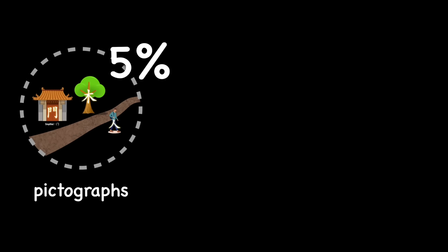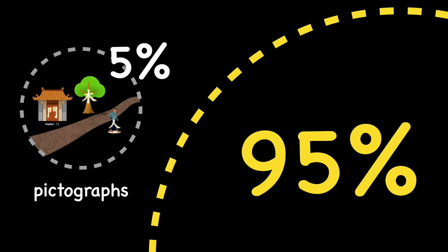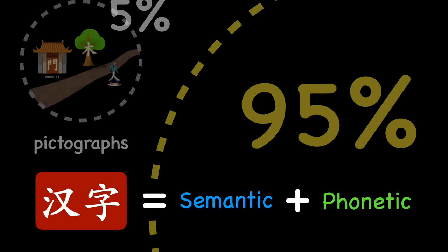In this video, you'll learn how the other 95% of Chinese characters are constructed and how just one simple formula is key to understanding them.